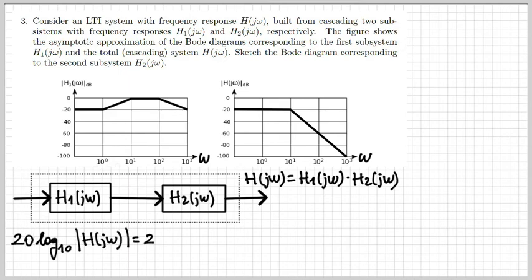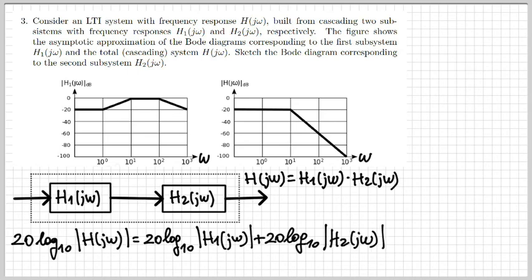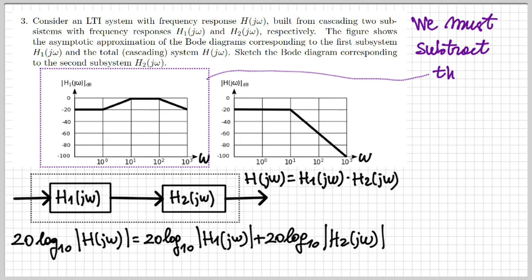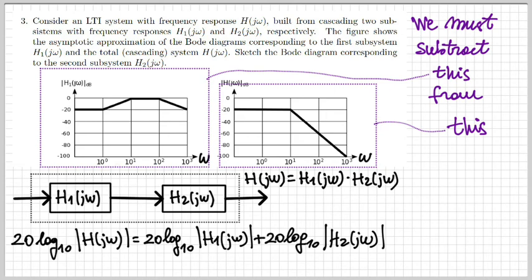So out of this, we know that regarding the Bode diagram of the magnitude, this product in logarithmic scale converts to a sum. So because 20 log 10 of the magnitude of h of j omega, since h of j omega is the product between two different frequency responses, is obtained as the sum between 20 log 10 h1 and 20 log 10 h2. So that means that if I want to obtain a Bode diagram for h2, I need to subtract h1 from h. So I can look at the two Bode diagrams that I'm given, and that by subtracting one from the other, I have the answer. I will be able to sketch a Bode diagram for the magnitude of h2 of j omega. So let's do that.